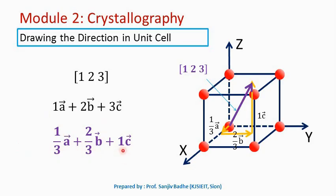All the components are positive here, so we can select this as origin. From origin, we will draw vector 1/3 a-bar plus 2/3 b-bar plus 1 c-bar. Then we draw one vector from origin up to this final point, and we get direction [1 2 3]. This is our required direction [1 2 3].